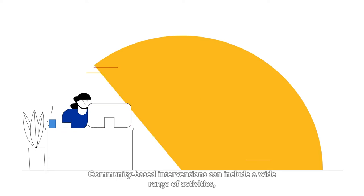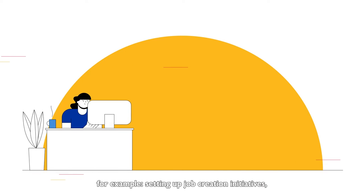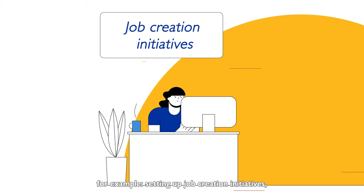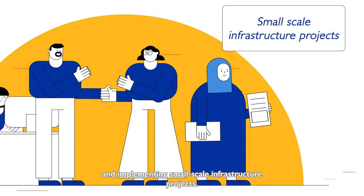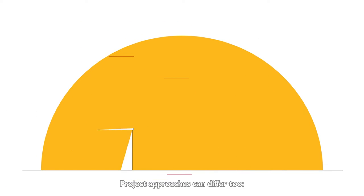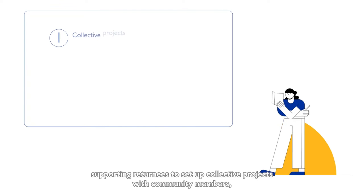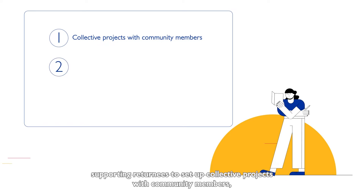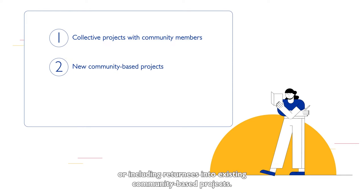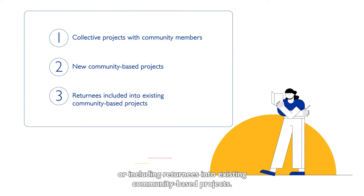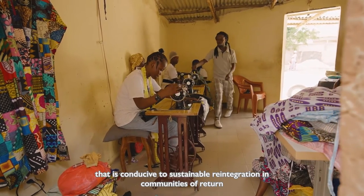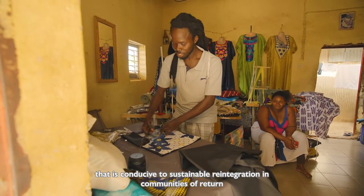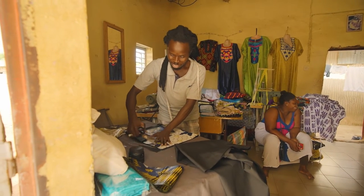Community-based interventions can include a wide range of activities. For example, setting up job creation initiatives, promoting dialogue among community members, and implementing small-scale infrastructure projects. Project approaches can differ too: supporting returnees to set up collective projects with community members, creating new community-based projects, or including returnees into existing community-based projects. Generally, all community-level reintegration initiatives aim to contribute to an environment that is conducive to sustainable reintegration in communities of return, and foster inclusion and strengthen their resilience.